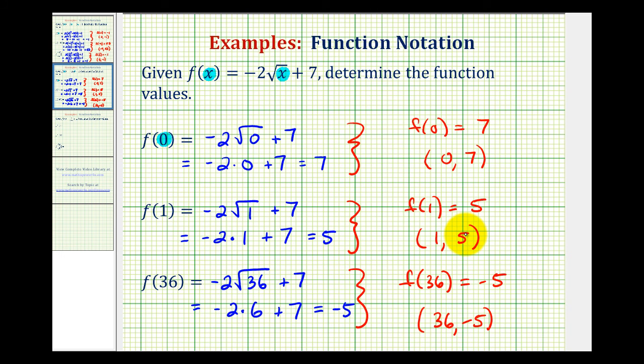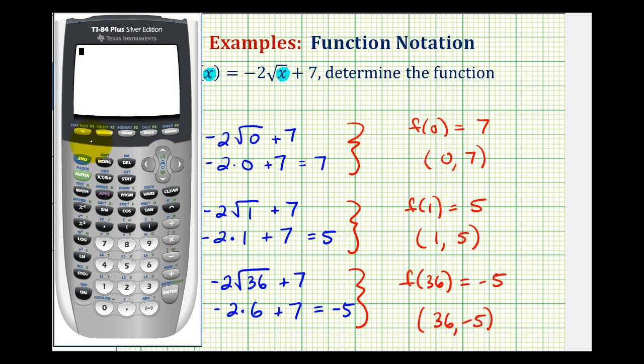Let's go ahead and quickly check these function values on the calculator. If we press y equals, clear this old equation, we can type in our function and then use a table feature to check our function values. So we'll have negative 2, second x squared brings up the square root. Then we have the square root of x plus 7.